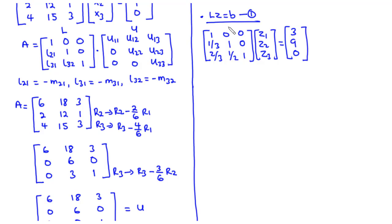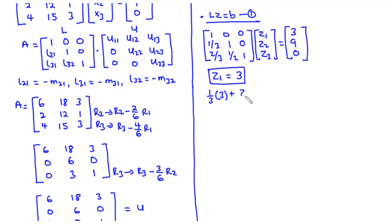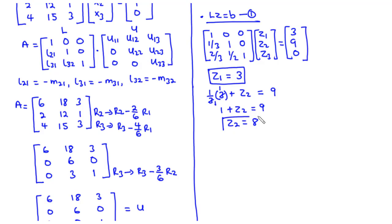From row 1: 1 times Z1 plus 0 times Z2 plus 0 times Z3 equals 3, so Z1 equals 3. From row 2: (1/3) times Z1 plus Z2 equals 9. Substituting Z1 = 3 gives 1 plus Z2 = 9, so Z2 equals 8.